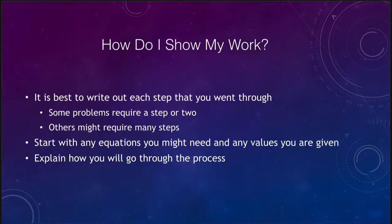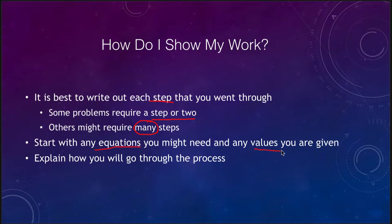So how do we go about showing work? The best thing to do is to write out every single step that you go through. For some simple problems you might only take a couple of steps, while other more detailed problems may have many steps. You should generally start off with any equations and any values that you are given, put those down, and then explain how you go through the process. Let's take a look at a couple of examples.